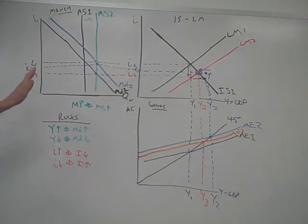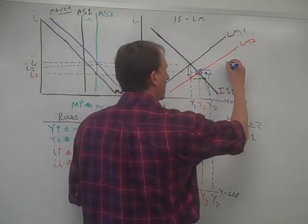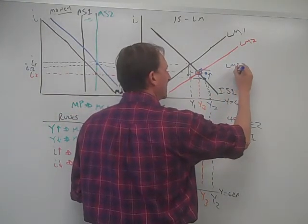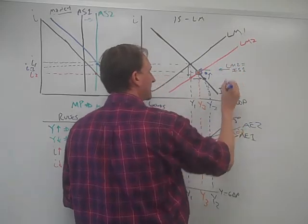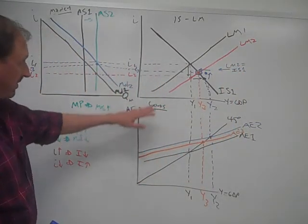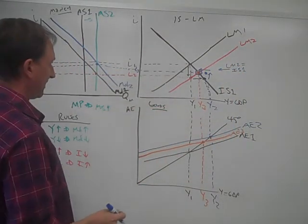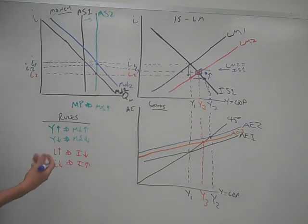Which now leaves us in equilibrium. We have a new point of equilibrium where LM2 equals IS1. That's that point right there, macroeconomic equilibrium. We're equilibrium in both markets at the same time.